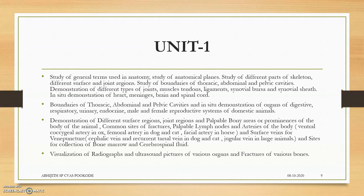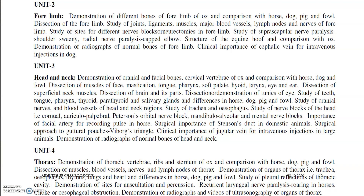For practicals, you will be having 8 units. These are the practical units: demonstration of different surface regions, palpable bones, etc. In forelimb practical, you will be studying the different nerves in the forelimbs, the different muscles in the forelimbs, different types of joints in the forelimbs, and the injection sites and all.